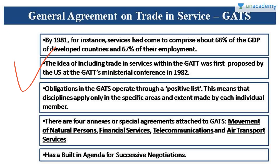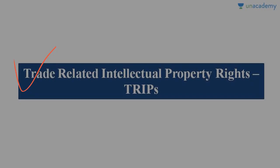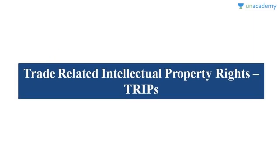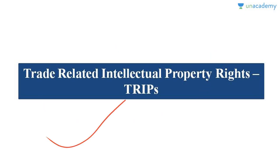Countries can negotiate and bring required changes in these agreements — GATS, GATT 1994, and Agreement on Agriculture all have this built-in agenda for successive negotiations. They can change according to the situation and circumstances. This is all about the agreements of the World Trade Organization. One more agreement — Trade Related Intellectual Property Rights (TRIPS) — we are going to deal with in the next video.